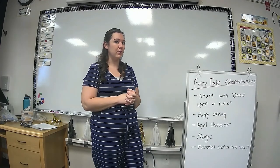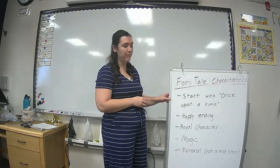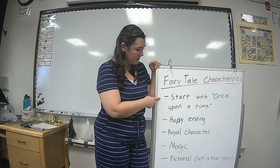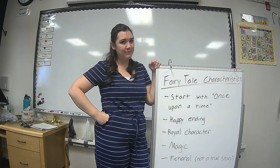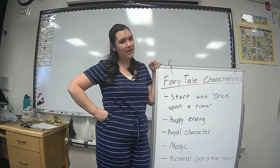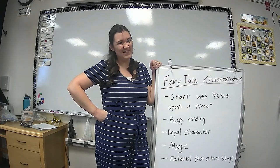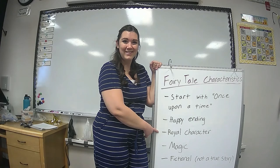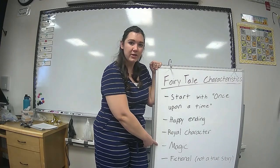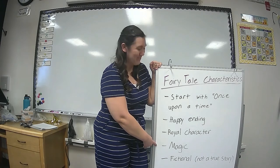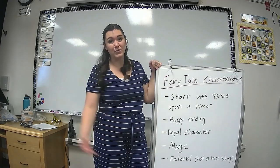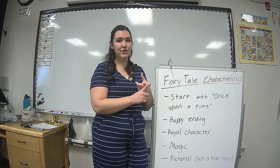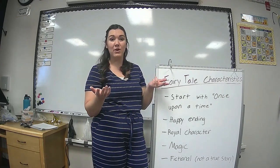Before we go on to our next thing, I want to review our fairy tale characteristics. We talked about some characteristics that most fairy tales have. The first is that they start with 'once upon a time' — did our story today start with 'once upon a time'? What about a happy ending — did it have a happy ending? Not really, because they wound up right back at the beginning. Was there a royal character? Who was the royal character? The fish. Was there magic? Yes, the fish had magical powers. And fairy tales are fictional — they're not real stories. What lets you know this story couldn't happen in real life? There was a talking fish and there was magic, so we know this story was fictional.